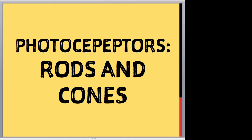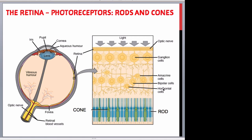Photoreceptors: rods and cones. The retina is the photosensitive part of the eye and has specialised cells called photoreceptors that begin the process by which light rays are ultimately converted to nerve impulses. There are two types: rods, seen here in blue, and cones, seen here in green. Each retina has about 6 million cones and 120 million rods. Light must travel through a number of different types of neural cells within the retina before reaching the photoreceptors. Light rays cause chemical changes in the photosensitive pigments in these cells, which generate nerve impulses conducted back through the neural cells and transmitted to the occipital lobes — the visual processing centre of the cerebrum — via the optic nerves.